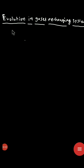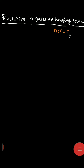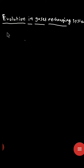Hello dear children, in today's class we will see the evolution in gases exchanging system. You know that animals are classified into non-caudates and caudates, and we will see how the evolution is taken in the respiratory system of the caudates and non-caudates. Non-caudates means the lower level of organisms.